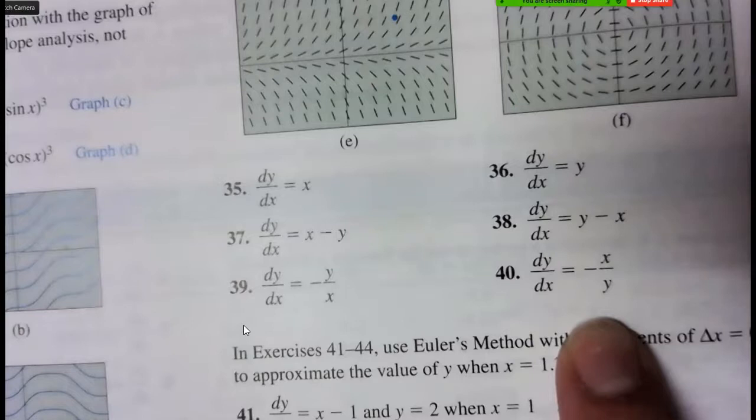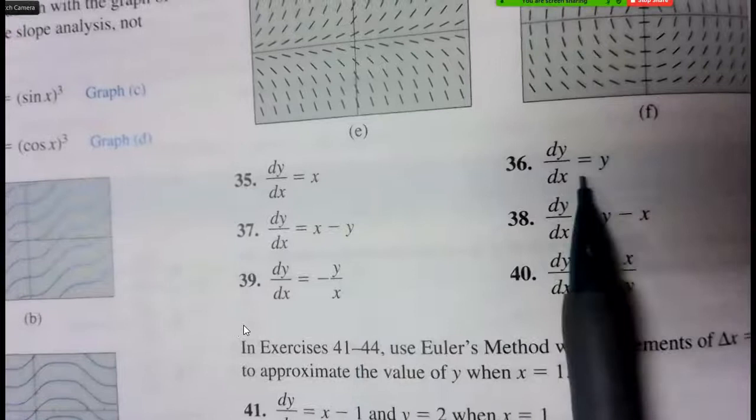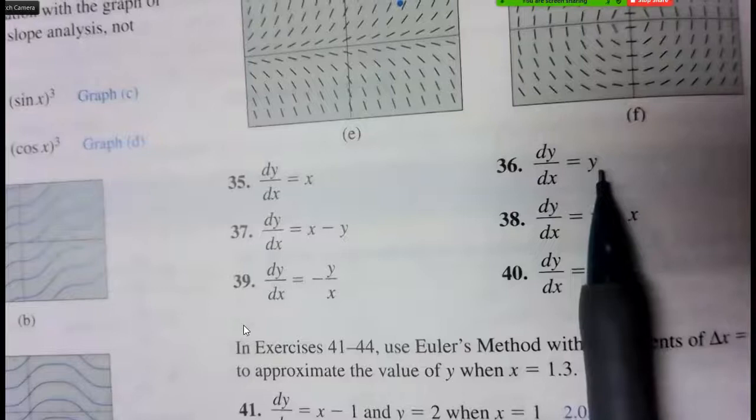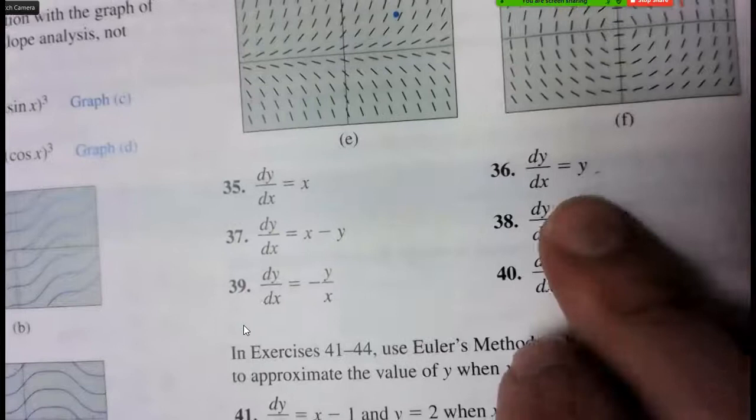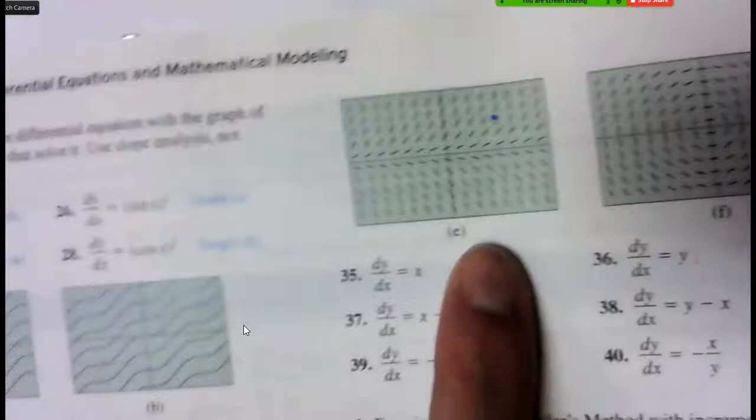And then what you could do if you're really struggling to match them is plug in a value. So if you plugged in dy/dx equals y, if you pick the point for y, this means the only values that are changing are on the y's, so the x's have to always be the same. So number 36 goes to letter e because the x slopes are always going to be the same.